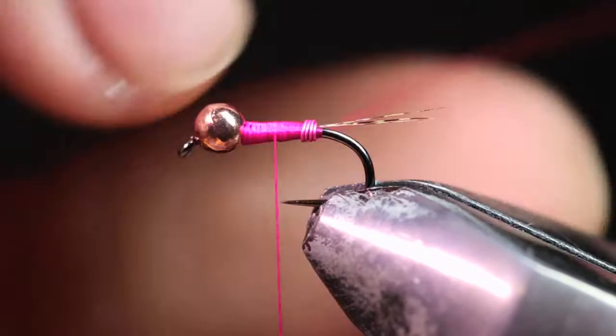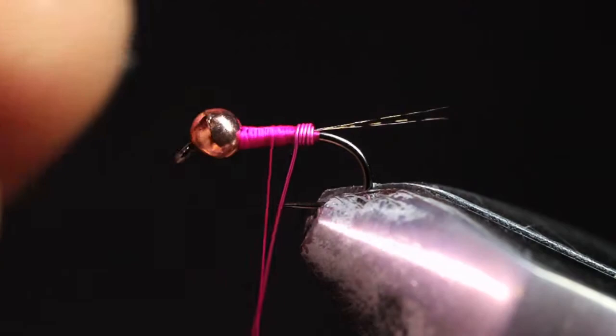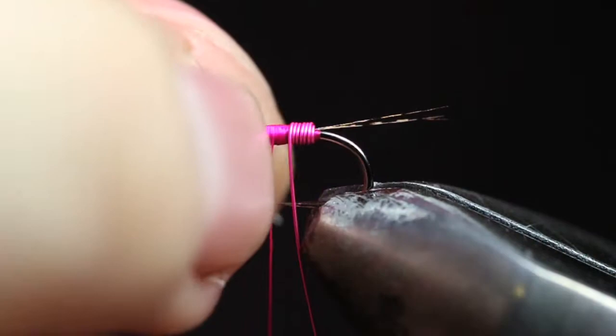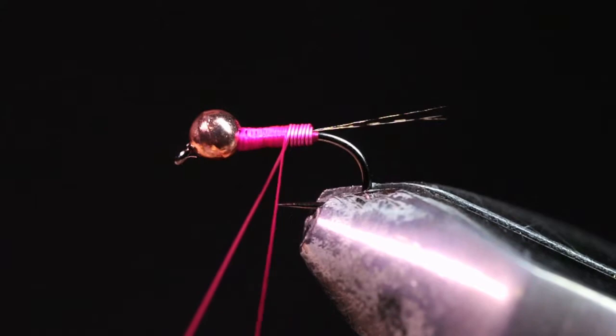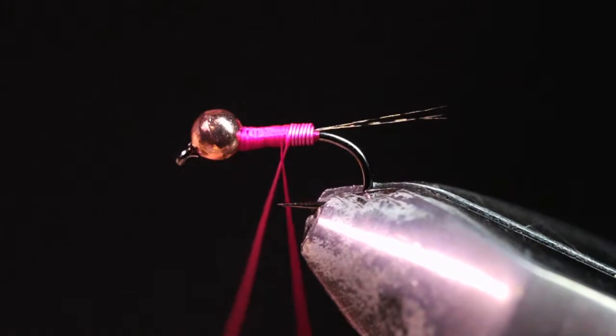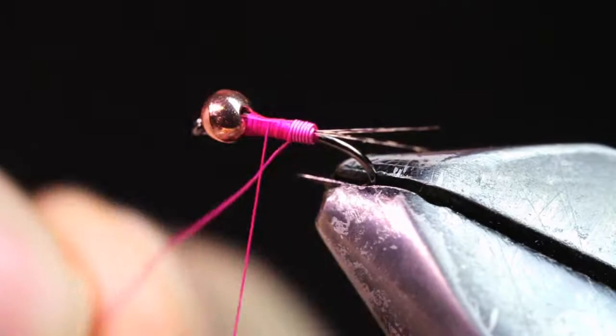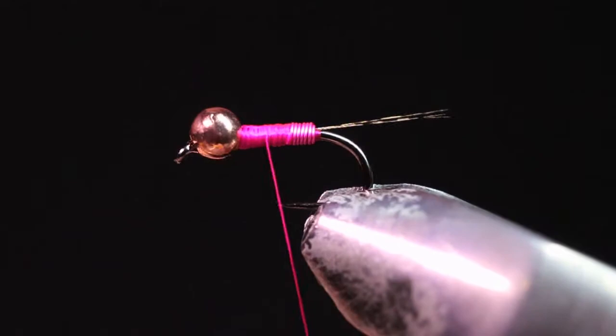Now you can change out the color of this. If you want to put chartreuse or gold or silver. The color combos are pretty endless. Now I'm just going to bring my thread back and tie off this wire nice and tight. Then I can just helicopter this wire out now. Just like so.